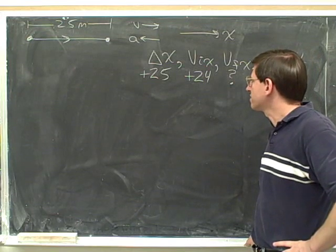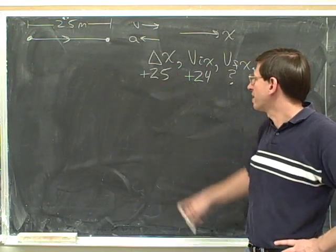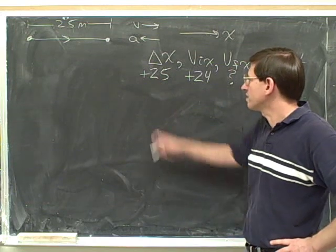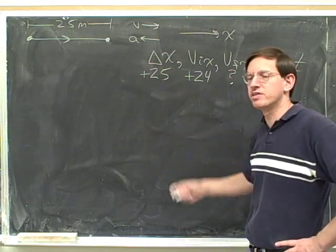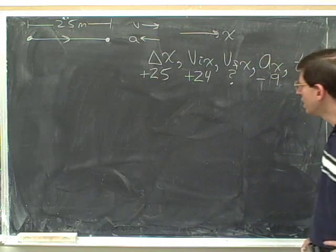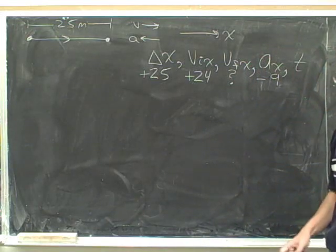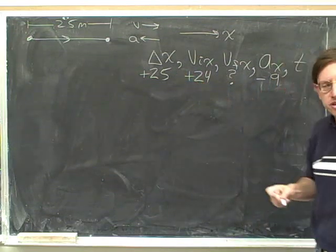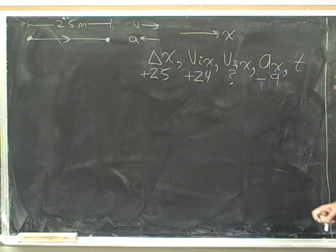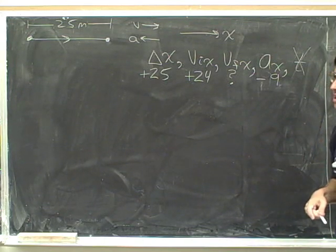We're ready to go on to step four and choose an equation when we've got three numbers. We've got three numbers: displacement, initial velocity, and acceleration. So now we need to pick the right equation — the one that's missing time. We don't care about time, so let's pick the equation that's missing time.